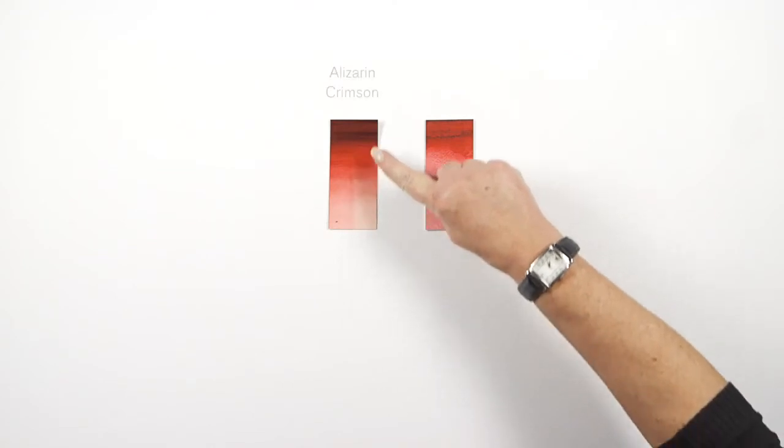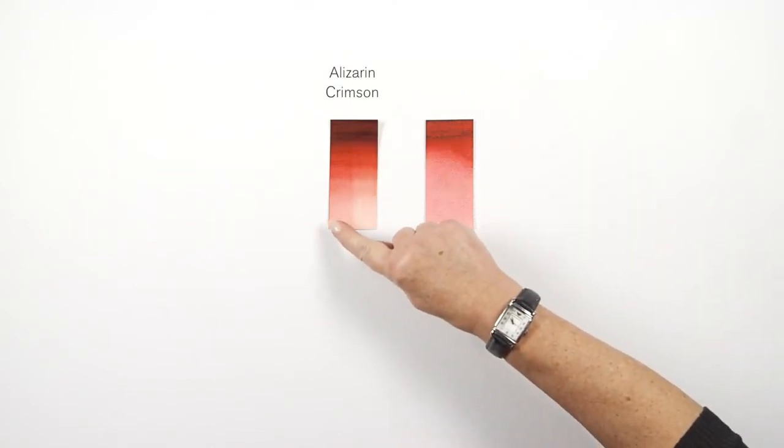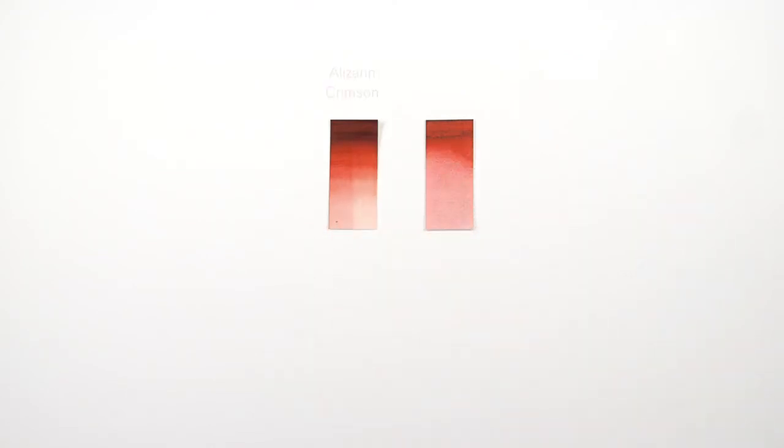As you can see the true alizarin crimson has faded significantly over its time in the test chamber, whereas the permanent alizarin crimson, as the name suggests, shows no fading over the same exposure period.